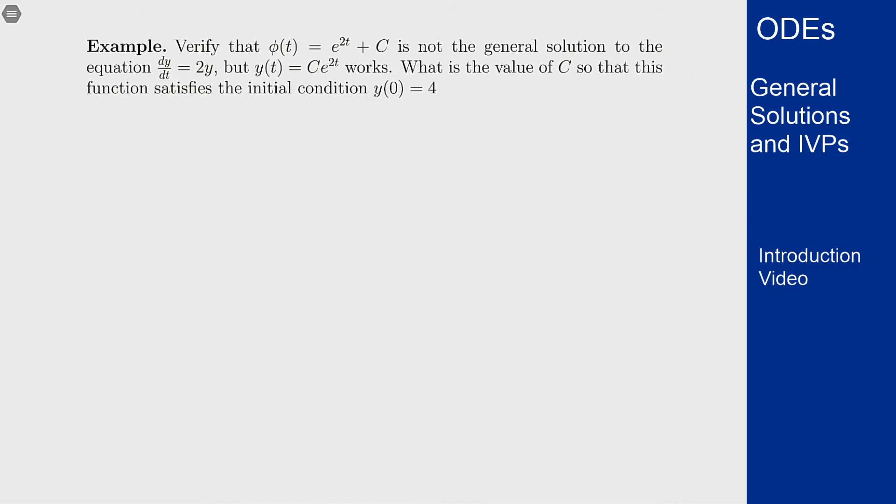So as an example we've got this differential equation here dy/dt = 2y not 2t but 2y this time and I want to verify that φ(t) = e^(2t) + c is not the general solution but c times e^(2t) does work. We do that just by taking the derivative.